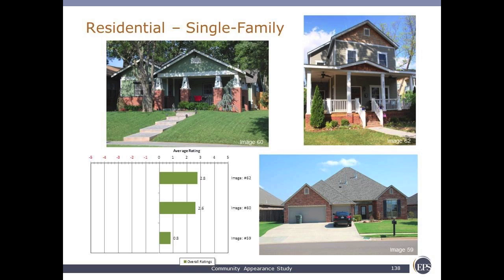Moving into residential, we have three examples — two single-family homes on the upper part, one older and one newer, both with historic overtones and front porches, and a lower-right single-family home. It was surprising to tour large areas of Oklahoma City and realize how prevalent that lower-right building type is in new development. It's a nice-looking house, but the upper two images score 2.6 and 2.8, while the lower right scores only 0.8. Clearly, homes with more historic attributes score higher in survey responses.